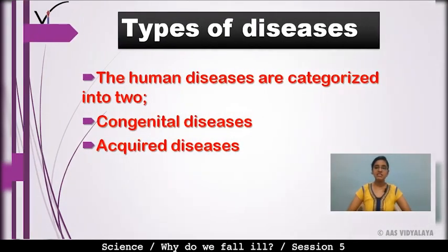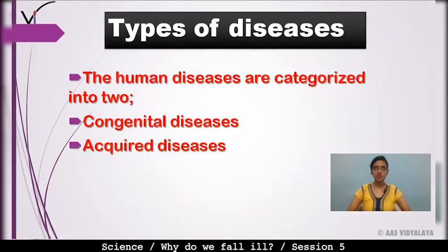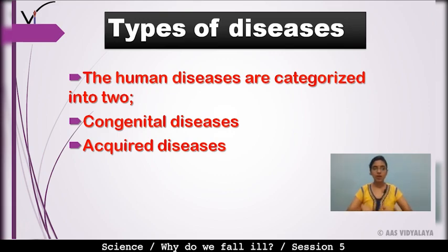Human diseases are divided into two categories: first, congenital diseases, and second, acquired diseases.